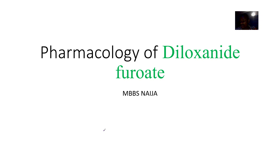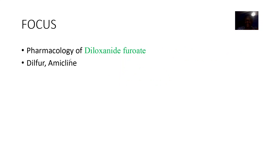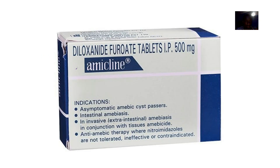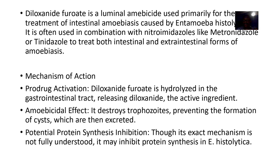The next drug we'll be talking about in pharmacology is Diloxanide Furoate. Diloxanide Furoate has one or two brand names like Furamide or Amicline. This is a luminal amoebicide, meaning it works in the intestines. It is used to treat intestinal amoebiasis caused by Entamoeba histolytica.